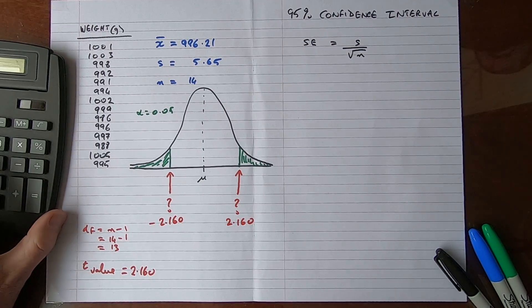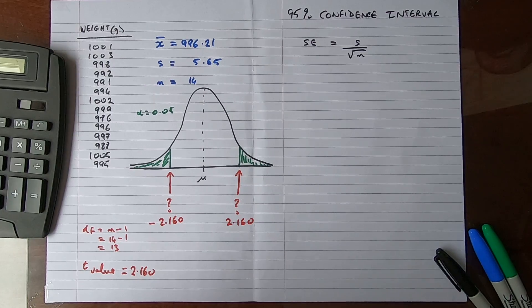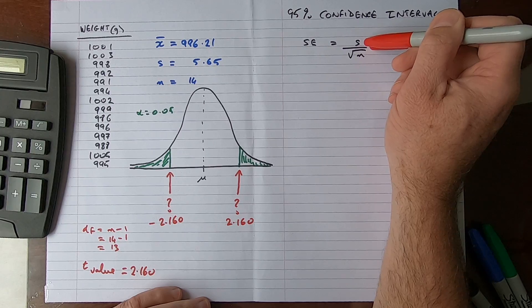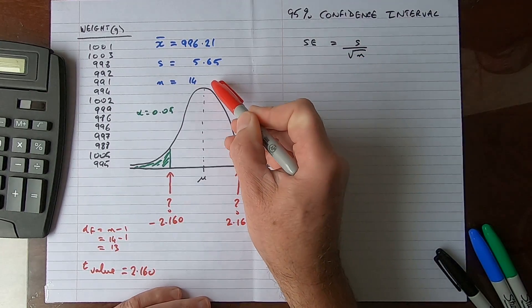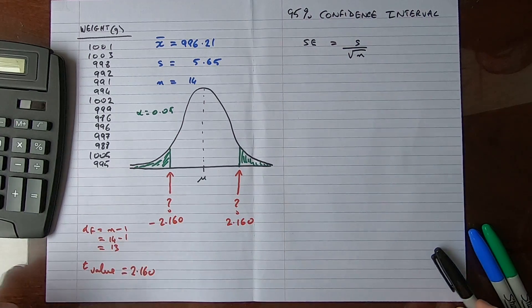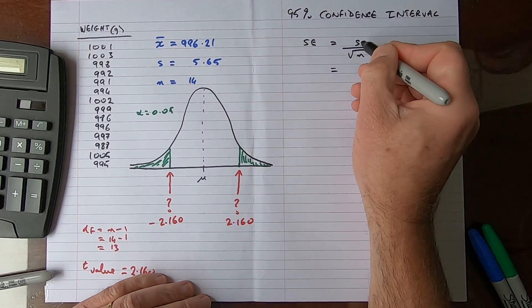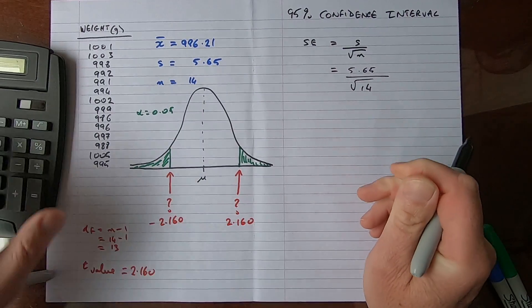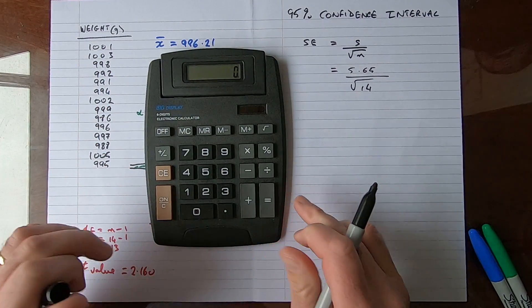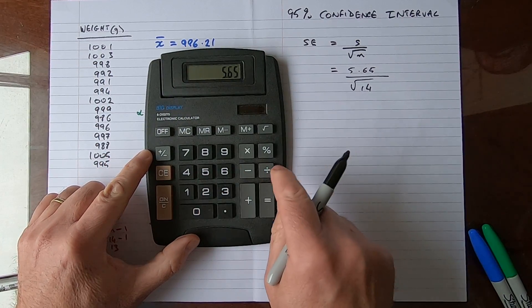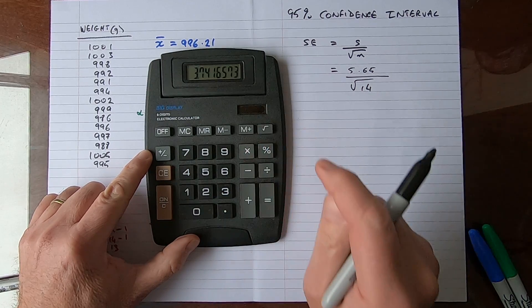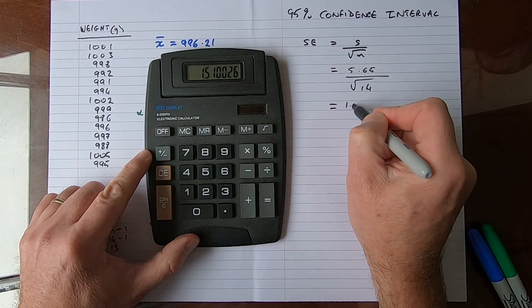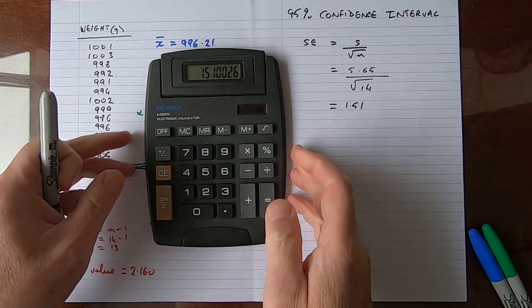Next we need to work out the standard error. The standard error of the mean is the sample standard deviation s divided by the square root of n, which in our case is 14. That equals 5.65 divided by the square root of 14. Let me get my calculator out: 5.65 divided by square root of 14 equals a standard error of 1.51.